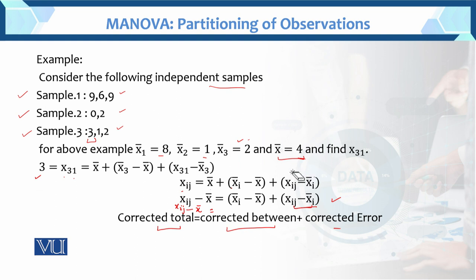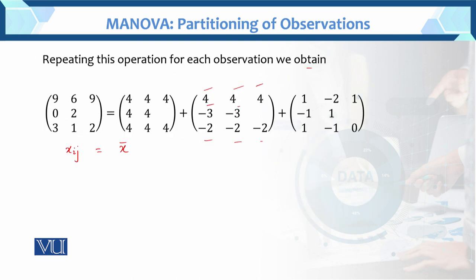The last term is xᵢⱼ minus x̄ᵢ. For sample 1: first value is 9 minus 8 = 1; 6 minus 8 = −2; 9 minus 8 = 1; 9 minus 8 = 1. Then 6 minus 8 = −2. Again 9 minus 8 = 1. The mean-adjusted values are computed for each observation.